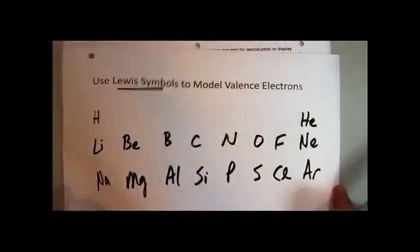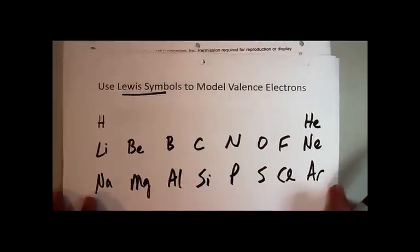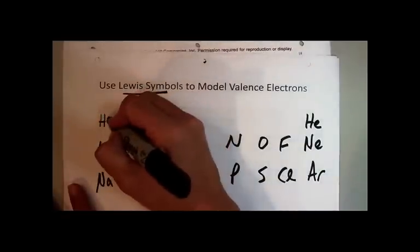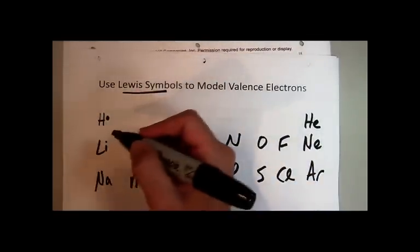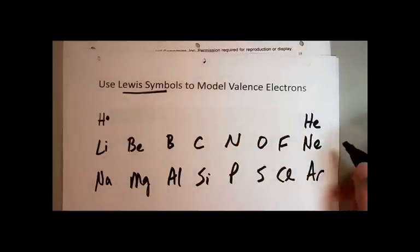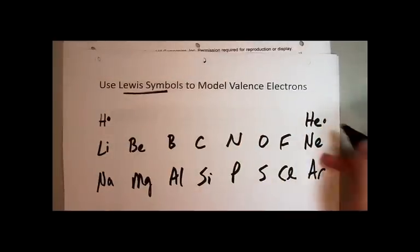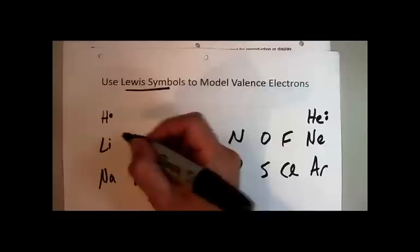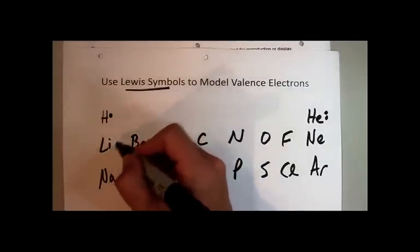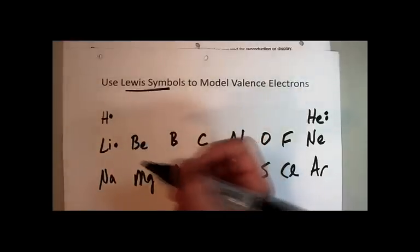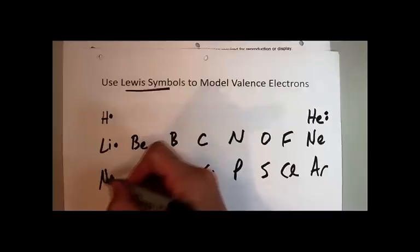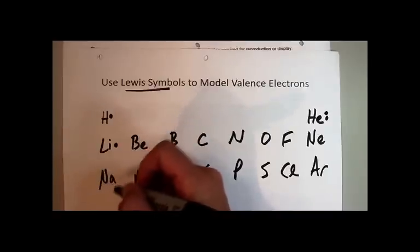For hydrogen, there's just one valence electron, so the H is modeling the nucleus. Helium has two valence electrons. Lithium has two inner electrons, so the Li tells me there's a nucleus and inner electrons, and then the valence electron—there's just one. Sodium has a nucleus, two levels of inner electrons, and then on the third level out I have one.